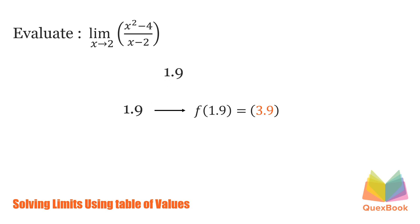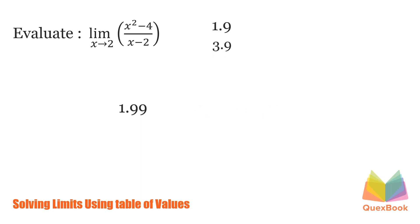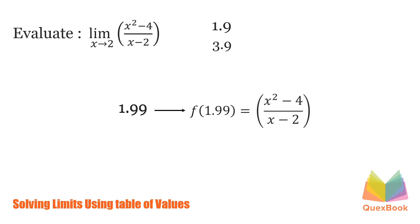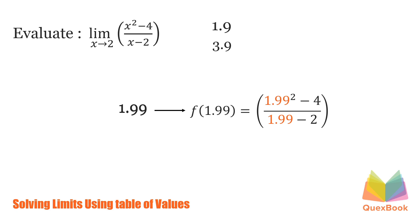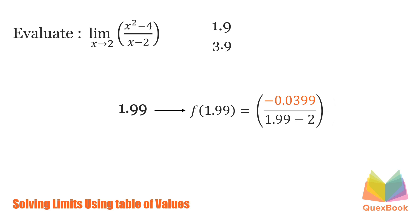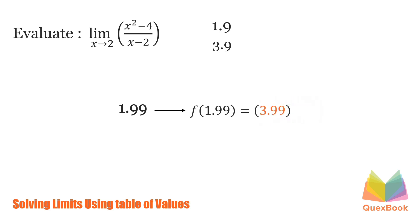Now let's plug it in our table. For the next number, let's try a number much closer to 2 — let's try 1.99. Evaluating the function, we have 1.99 squared minus 4 over 1.99 minus 2. 1.99 squared is 3.9601, minus 4 is negative 0.0399. Now, 1.99 minus 2 is negative 0.01. Dividing the function, we have 3.99.